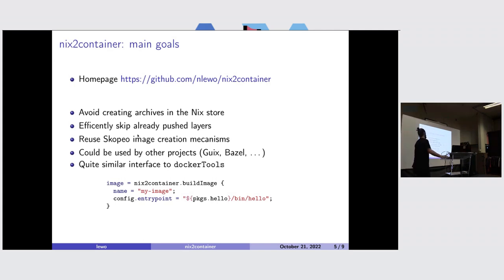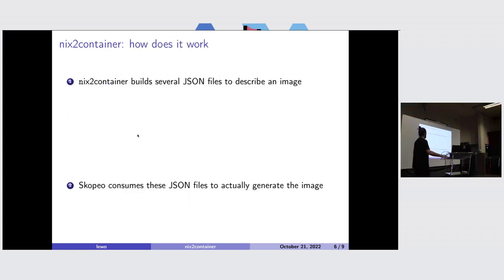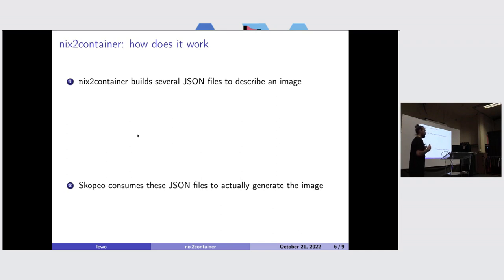Currently it's hosted in my GitHub space. So how does it work? Basically, NixToContainer is a two-step process. The first step is at build time: NixToContainer builds some JSON files to describe an image, and we store these JSON files in our Nix store. At runtime, when we want to actually create the image, we use Scopeo, and Scopeo consumes this JSON file and actually generates the image.